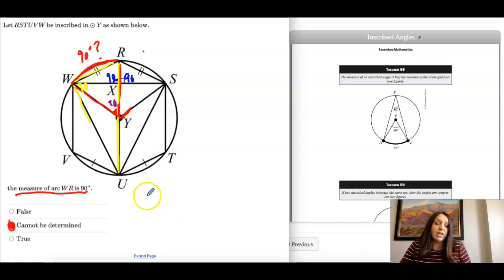It doesn't look like 90, but it might not be to scale. That's 90 and that's 90. So I can't have two 90 degree angles, so we actually can tell that this would be false. We can't have two 90 degree angles in a triangle and it wouldn't be a triangle.